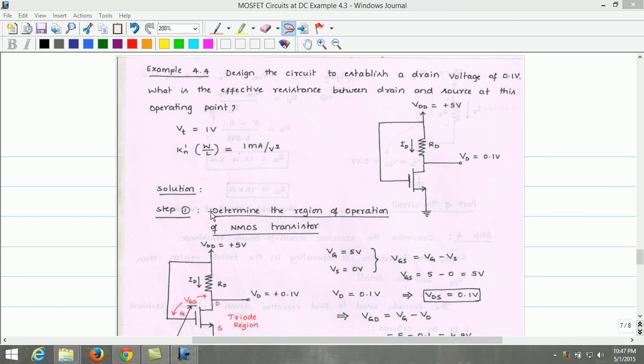In the first step, let us determine the region of operation of NMOS transistor. VG equals 5 volt since the gate of the MOSFET is tied to the VDD.